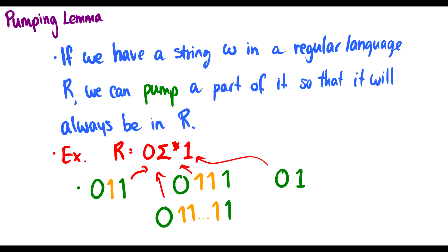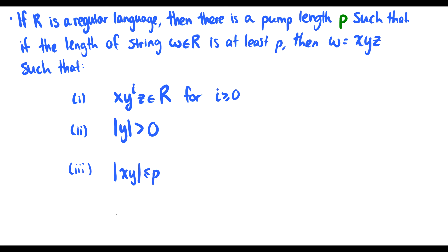We're going to use this pumping lemma to show that some languages are not regular. More precisely, if R is a regular language then there's some pump length p such that if the length of string w in R is at least p, then we can split w into three parts x, y, and z such that we can pump y up and down and it's still going to be in R. The length of y must be greater than zero, and the combined length of x and y must be less than or equal to p.